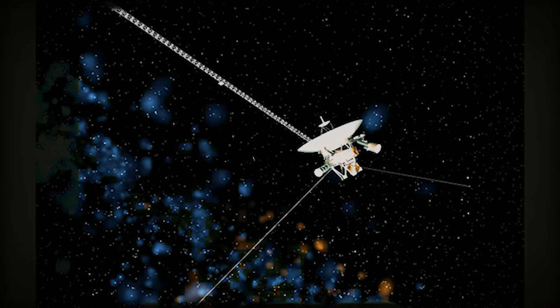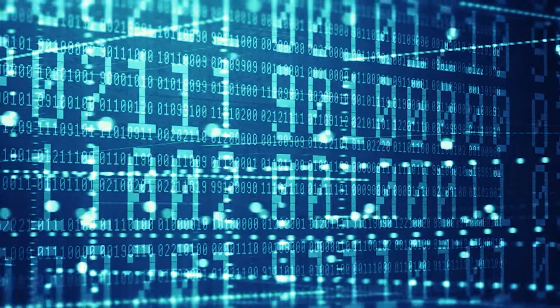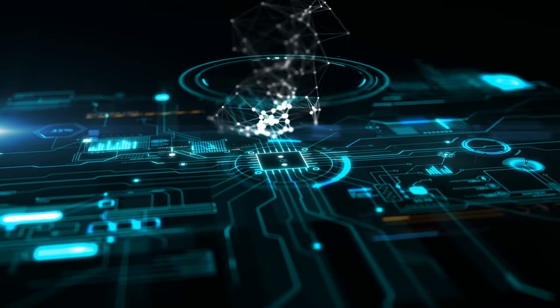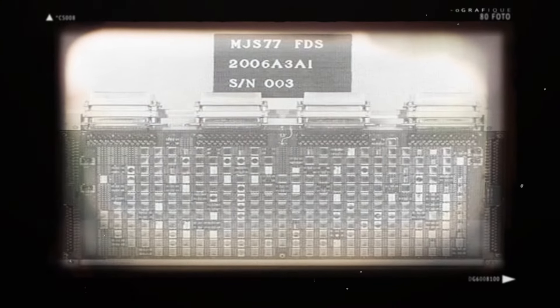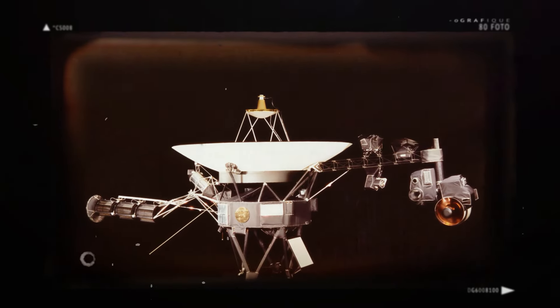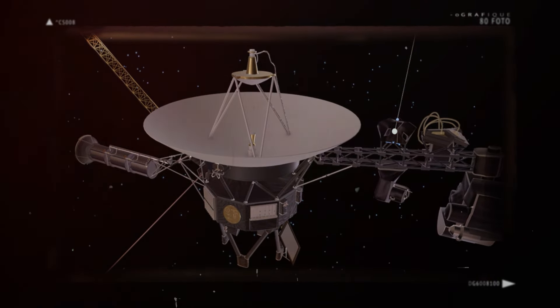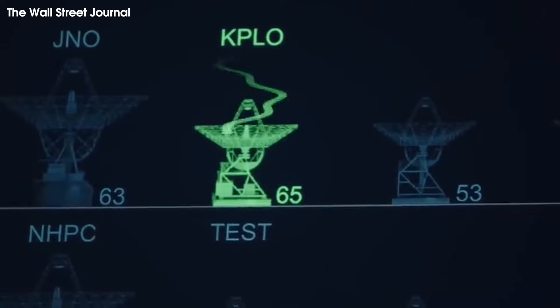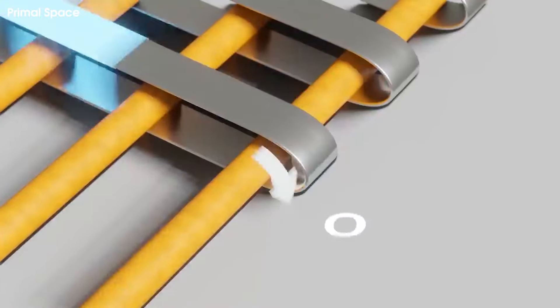The latest problem with Voyager 1, most likely, lies in the probe's flight data subsystem, one of three computers on the spacecraft working alongside a command-and-control central computer and another device overseeing attitude control and pointing. The flight data subsystem is responsible for collecting science and engineering data from the spacecraft's network of sensors and then combining the information into a single data package in binary code, a series of ones and zeros. A separate component called the telemetry modulation unit actually sends the data package back to Earth through Voyager's 3.7-meter dish antenna. According to NASA, in November, the data packages transmitted by Voyager 1 manifested a repeating pattern of ones and zeros as if it were stuck.